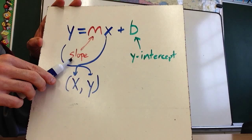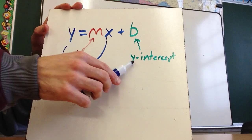m stands for slope. So this represents the slope of the line. And b represents the y-intercept.